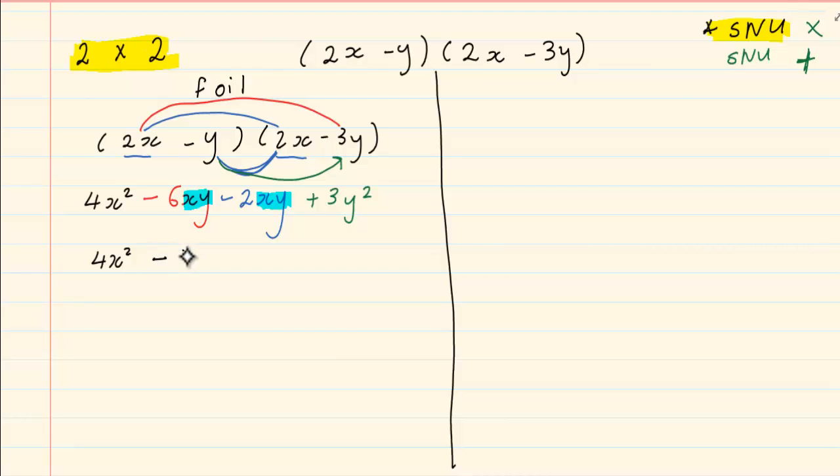So we have got minus 8xy. When we are subtracting, the unknowns do not change. Plus 3y squared.